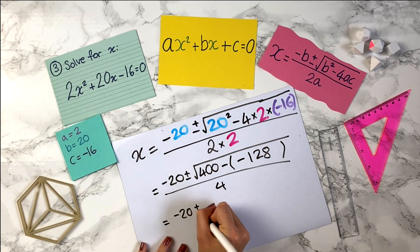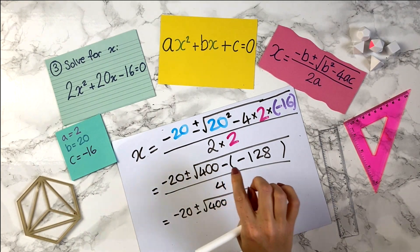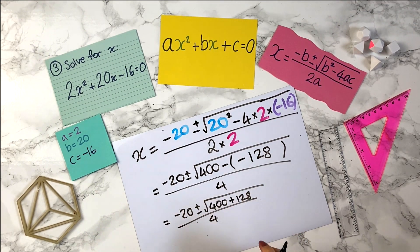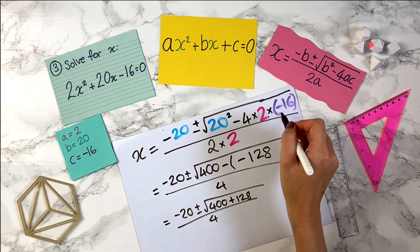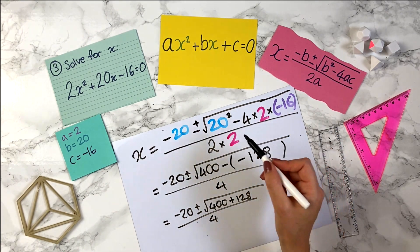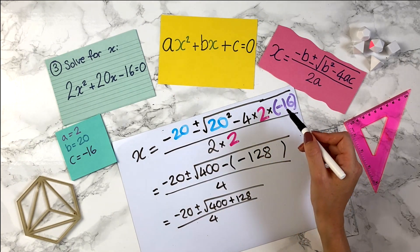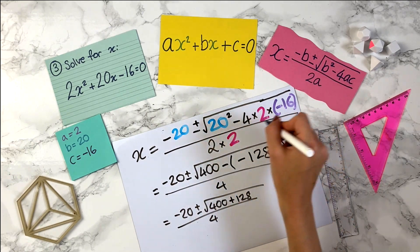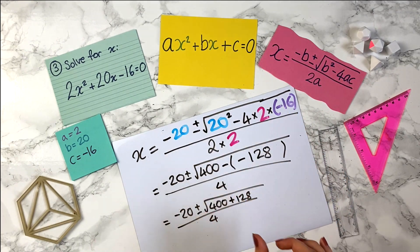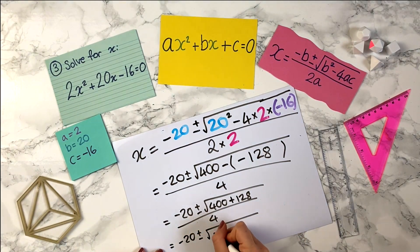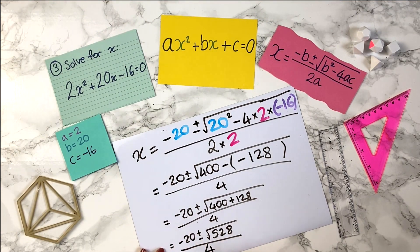That equals minus 20 plus or minus the square root of 400 — minus minus 128 is plus 128 — over 4. So just take your time to think: if you've got minuses appearing, if you've got a minus here and a minus there, it becomes a positive. If it was minus 4 times minus 2 times minus 16, then it would overall be a minus sign. So just be really careful and double-check you've got the right sign — you can always use a calculator to make sure you've got the right answer under the square root sign. So that's minus 20 plus or minus the square root of 528, all over 4.